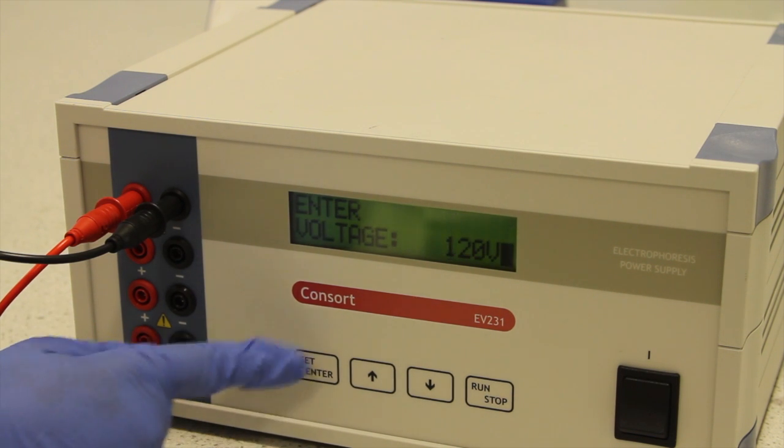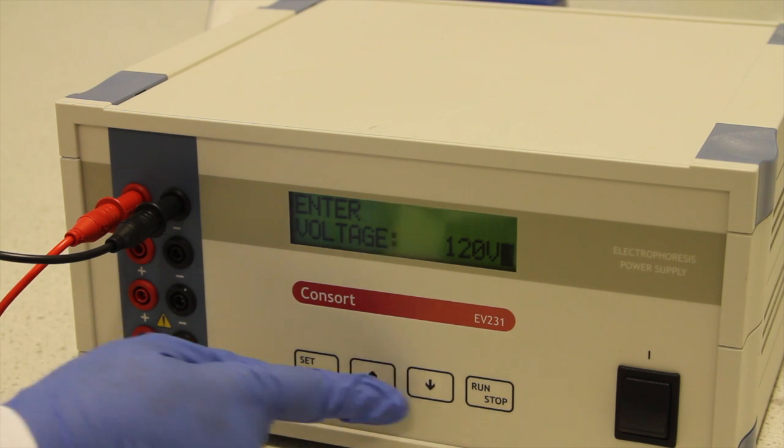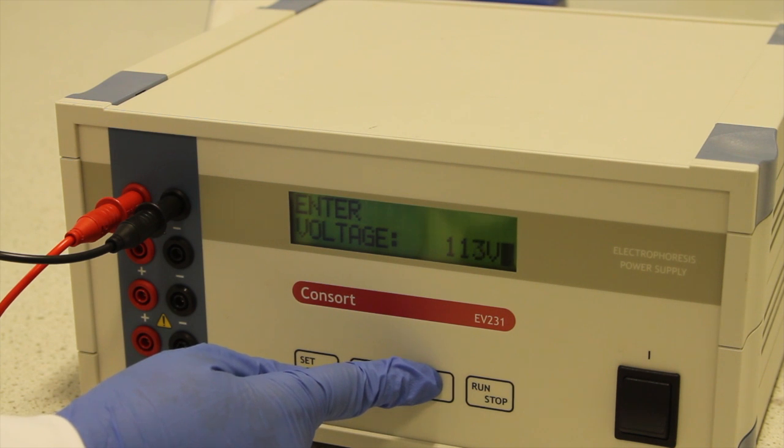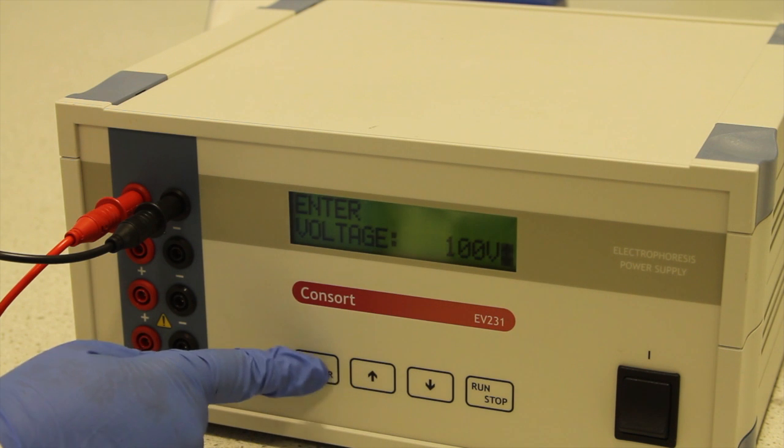Turn on the power pack. Press set until the display shows enter voltage. Use the up or down arrow to set the voltage required, in this case 100 volts. Press run.